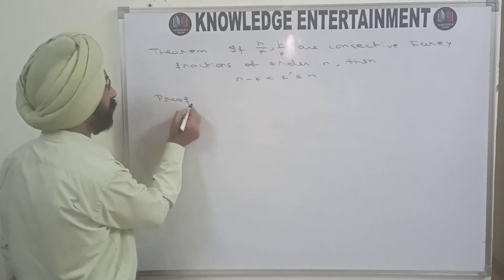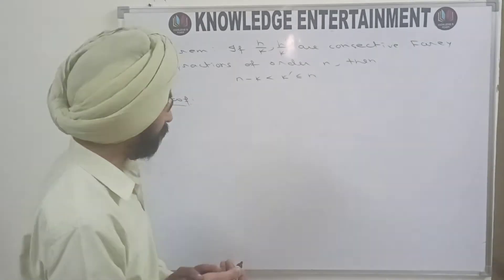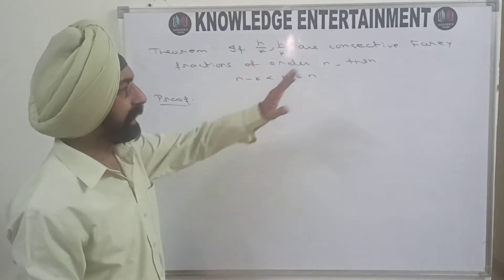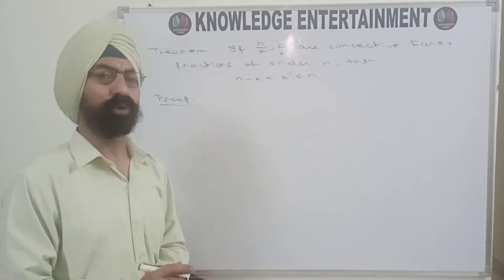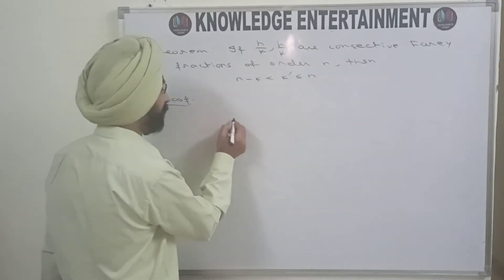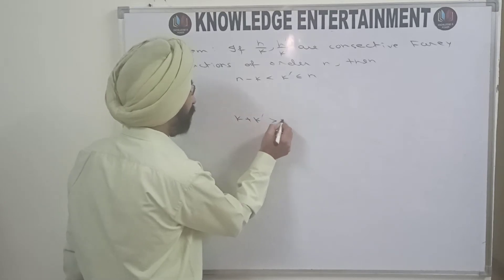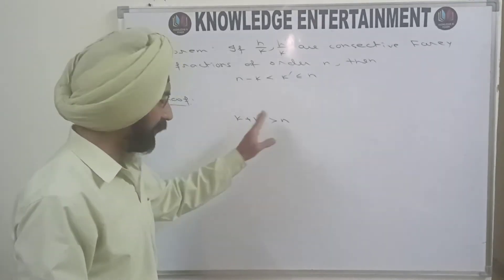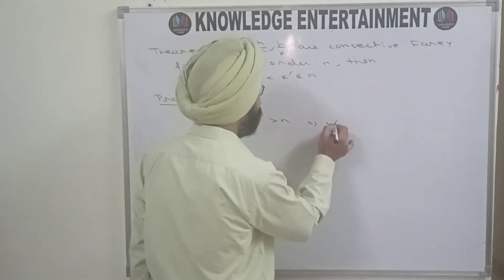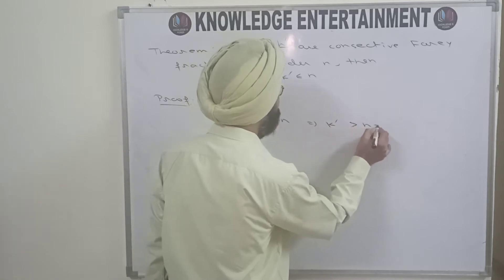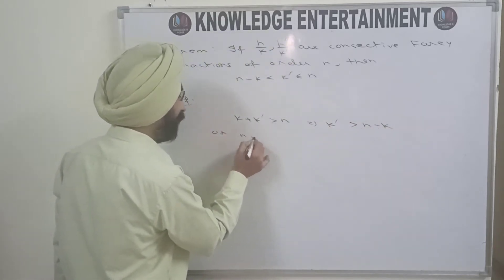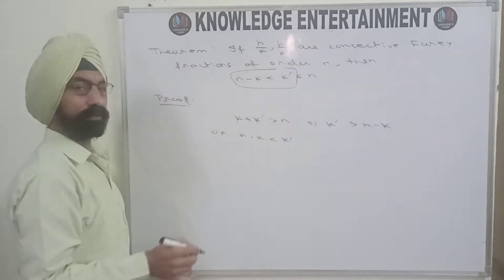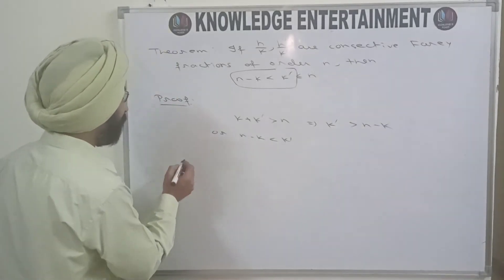The proof is just two or three lines. Since h/k and h'/k' are consecutive Farey fractions of order n, we have already proved in the previous video that k plus k' must be greater than n. Taking k to the other side, you get k' is greater than n minus k, i.e., n minus k is less than k'. This part is proved.